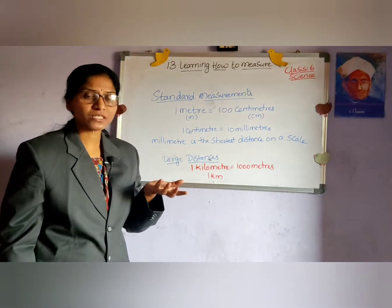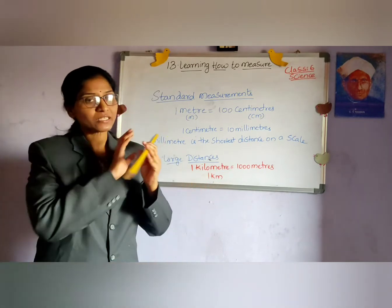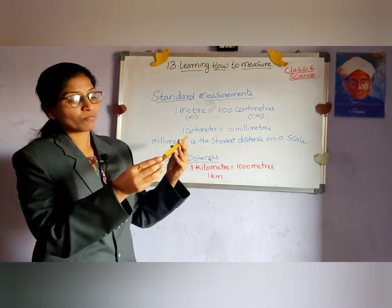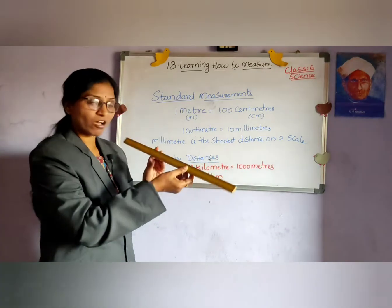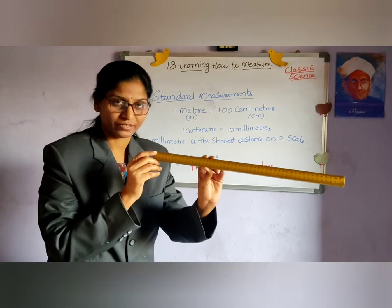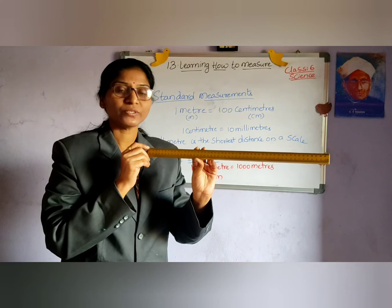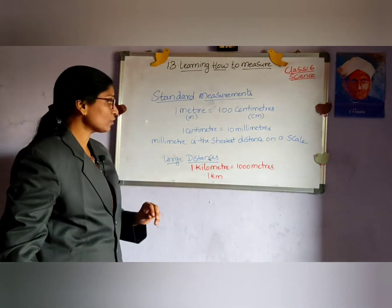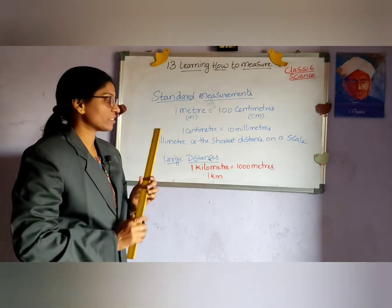The standard measuring units are: 1 meter equals 100 centimeters, and 1 centimeter equals 10 millimeters. You can find this on the scale. This scale is 50 centimeters, which is half a meter. The centimeter is again divided into 10 divisions, which are millimeters — 1 unit is 1 millimeter. The millimeter is the shortest distance on the scale that we can measure. So 1 meter equals 100 centimeters, and 1 centimeter equals 10 millimeters.